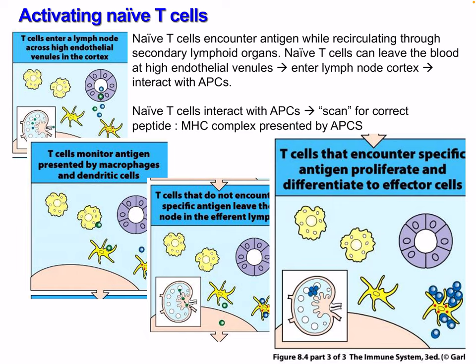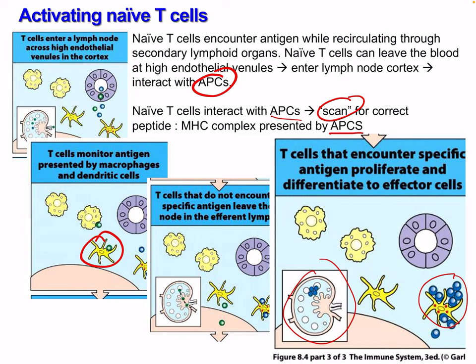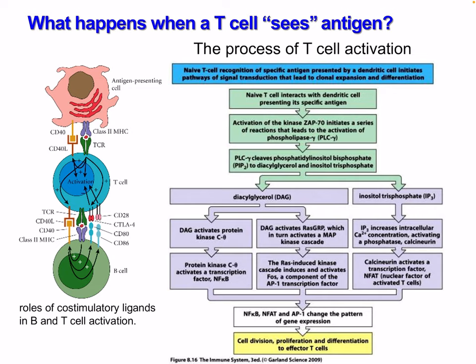Naive T cells encounter antigen while recirculating through secondary lymphoid organs such as the spleen and lymph nodes. Naive T cells can leave the blood at high endothelial venules (HEVs) and enter the lymph node cortex and interact with APCs, usually dendritic cells. Naive T cells interact with APCs and scan for the correct peptide-MHC complex presented by APCs. T cells that encounter specific antigen proliferate and differentiate into effector cells.